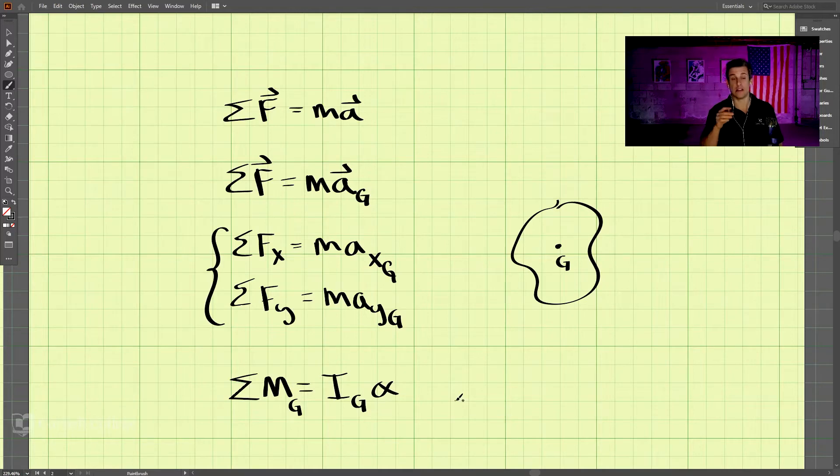Now, if a body is purely translating and not rotating, so for no rotation about the center of gravity, we have the sum of the moments about the center of gravity equals zero. But we will encounter problems in this class where we need to use this formula.